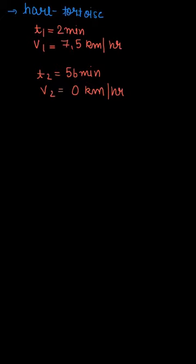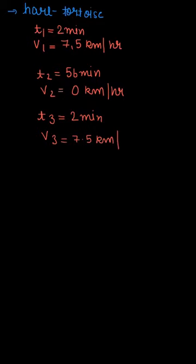After this, we have been given that he ran again. So the time would be T3 — he ran for two minutes and the speed V3 equals 7.5 km per hour. Basically, we need to find the average speed in the race.